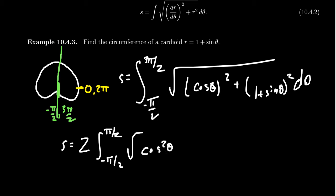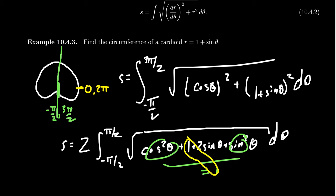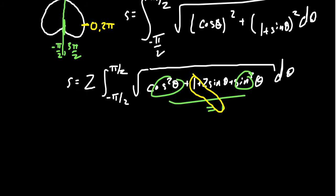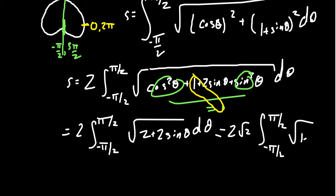Looking inside the radical, we have cosine squared plus the foiled-out 1 plus sine squared, which gives 1 plus 2 sine theta plus sine squared theta. The cosine squared combines with the sine squared to give 1, and adding that 1 to the existing 1 gives 2. So we have 2 times the integral of the square root of 2 plus 2 sine theta.